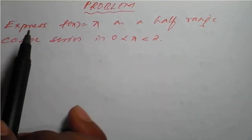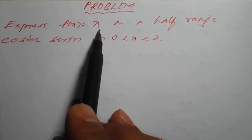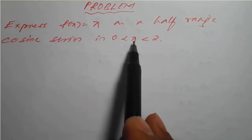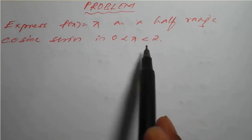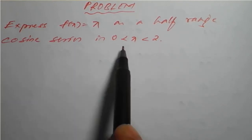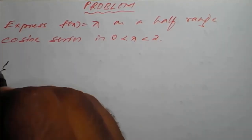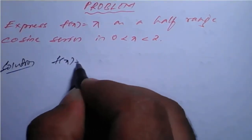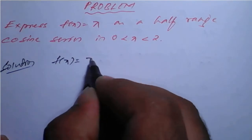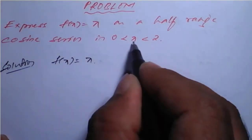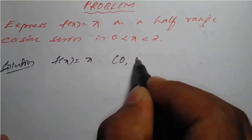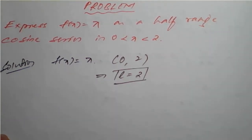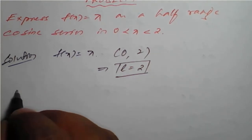The problem is: express f(x) = x as a half range cosine series in 0 < x < 2. We will solve the same question but with a cosine series. The given function f(x) = x is defined on the interval 0 to 2, which implies that the value of L is 2.